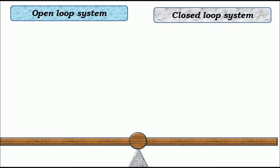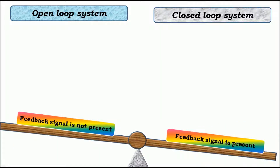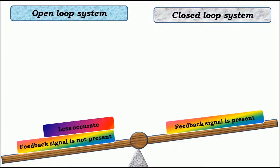The first difference between open loop and closed loop systems: in an open loop system, feedback signal is not present, whereas in a closed loop system, feedback signal is present. The second difference is open loop systems are less accurate, while closed loop systems are more accurate.